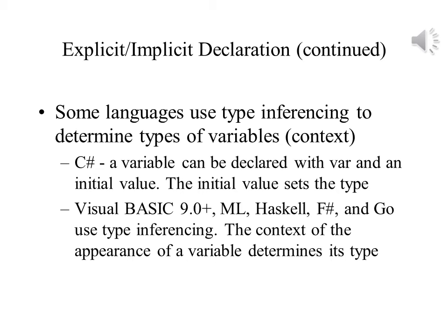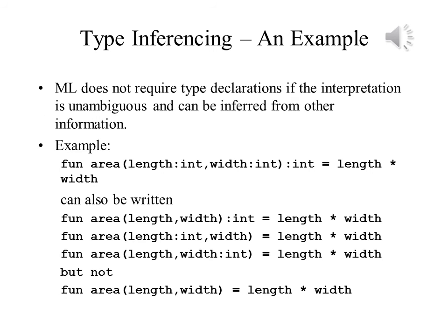Type inference is also used in more recent versions of Visual Basic, and in ML, Haskell, and F#. While ML uses static typing, it can infer data type if the interpretation of type is unambiguous. In the example shown, the original definition has two parameters, length and width, both integers, as is the result area. But the type of both parameters can be omitted if area's type is declared as integer. Similarly, the types for area and width can be omitted if length's type is integer, or the types for area and length omitted if width's type is integer. However, all three types cannot be left out, because there would be nothing from which to infer their data types.